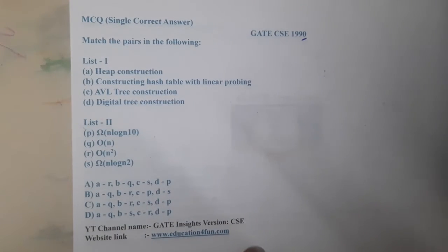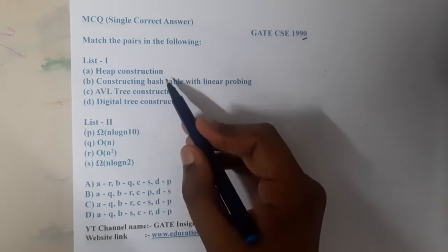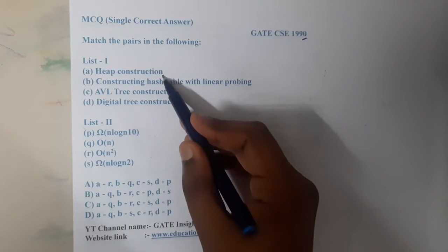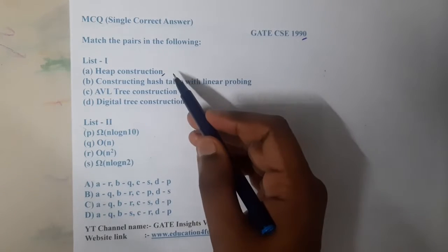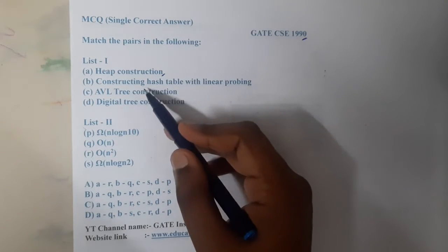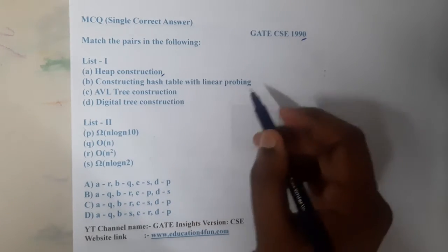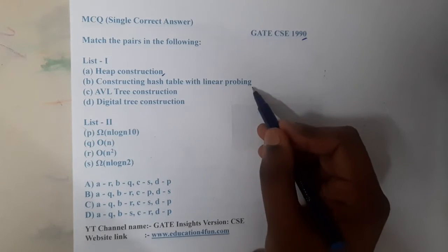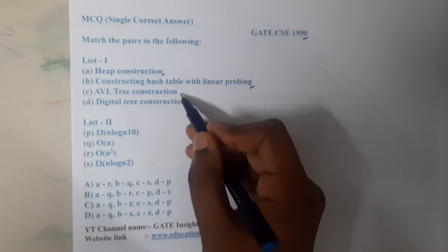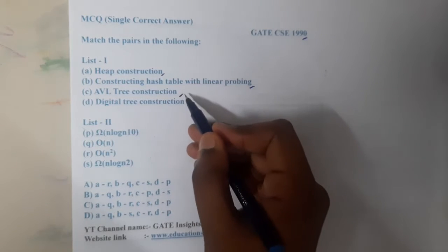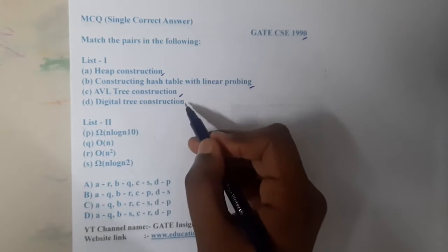The question is a bit simple. They gave some things directly and are asking for the complexities. First thing is heap sort construction, similarly construction of a hash table with linear probing, AVL tree construction, and digital tree construction.